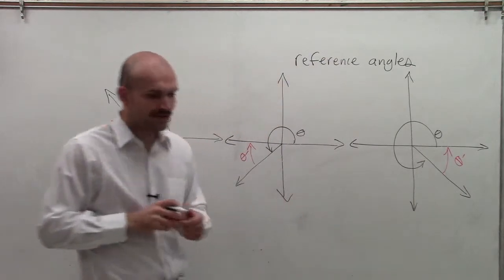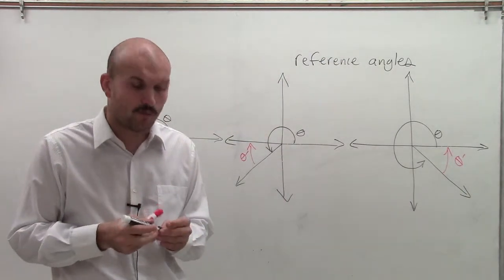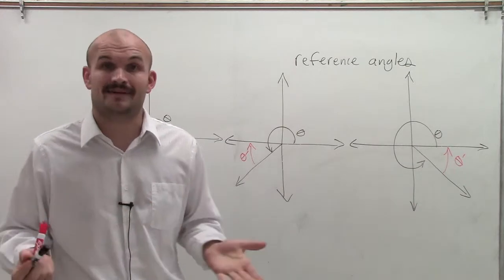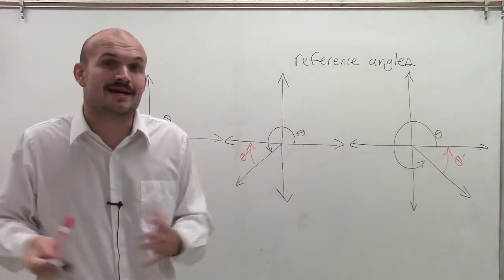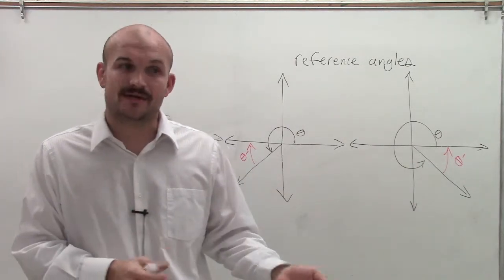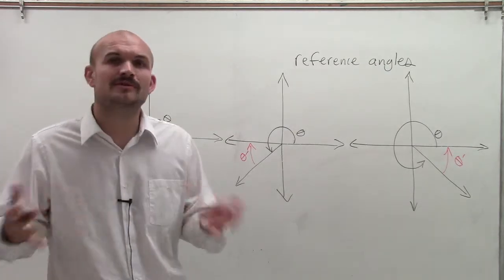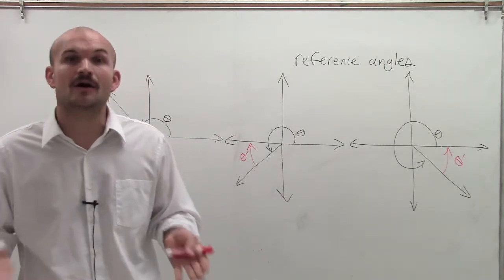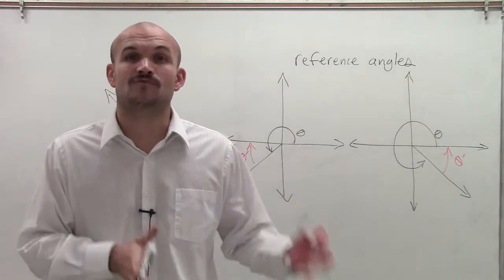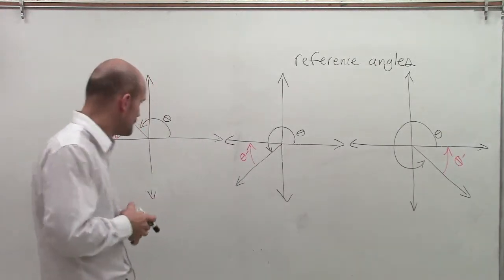There are a couple of important things to recognize when dealing with reference angles. Our reference angles cannot be negative — it's defined as an acute angle, which means the angle has to be between 0 and 90 degrees. So if when doing the mathematics you come up with a negative angle, just understand that's the negative direction, and your acute angle is always going to be positive.